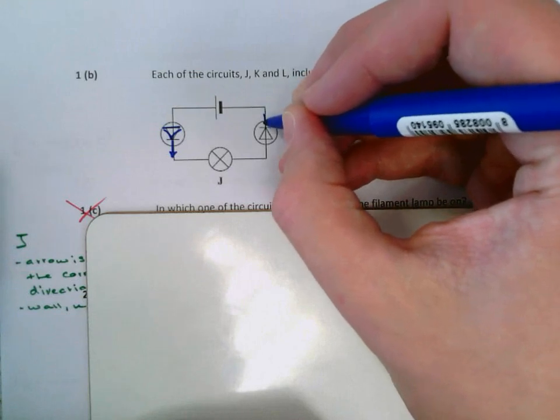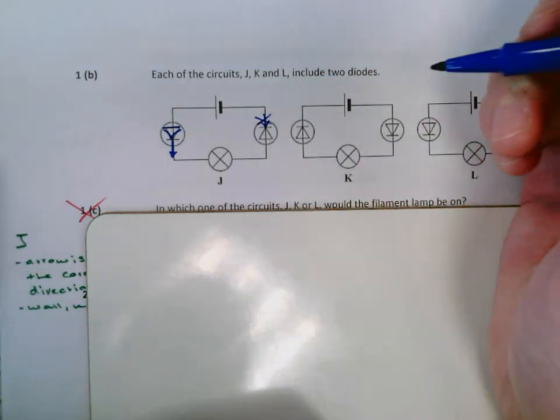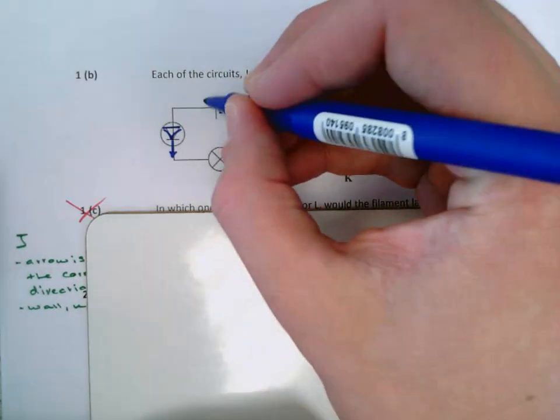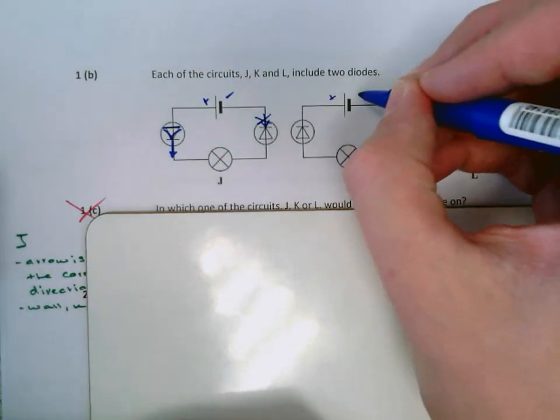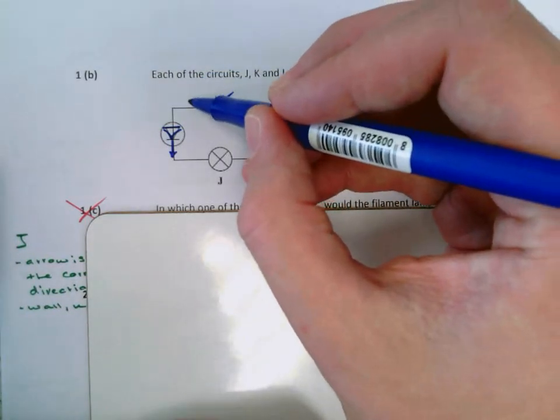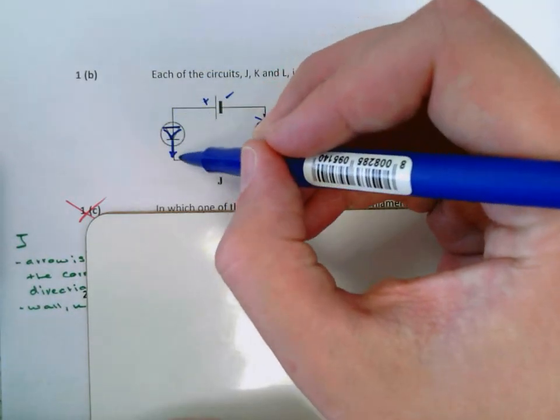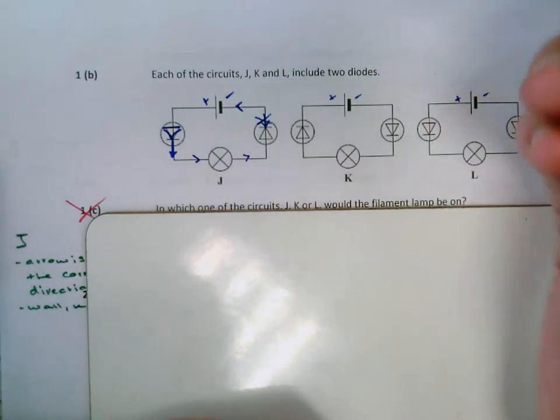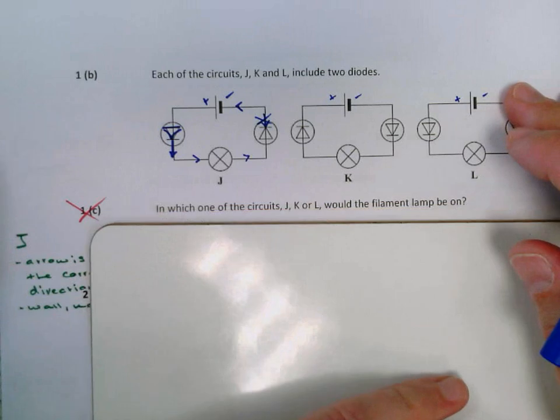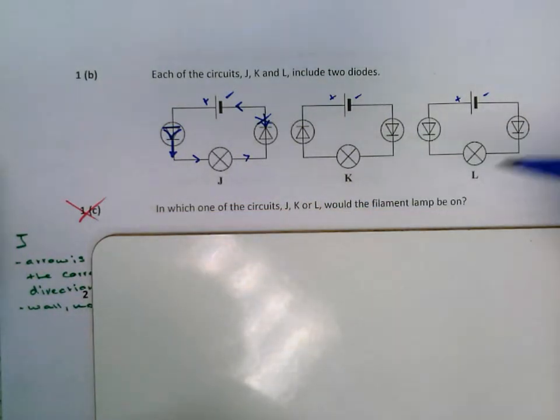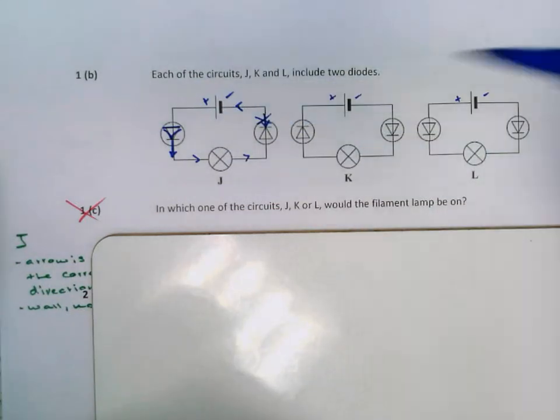It can't be the case that current can flow through a wall, so that wouldn't happen. Now, if we go from positive to negative on each circuit, we'll go round here. We can go through the arrow. We go through the bulb. We can go through this arrow. So actually, the first one answers the question, which one of the circuits would the filament lamp be on? It would be this one, because the current can flow throughout the whole circuit.